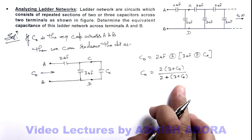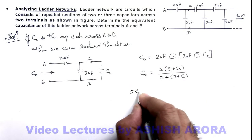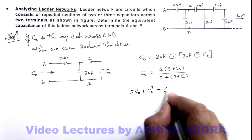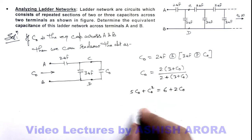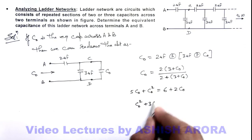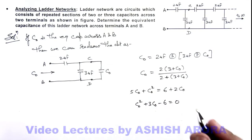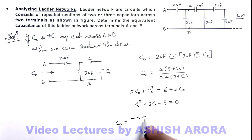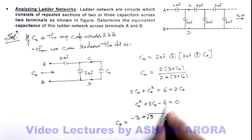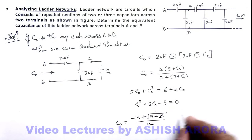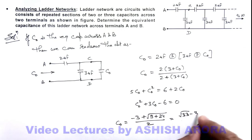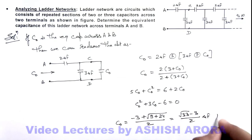Simplifying gives a quadratic equation: 5C₀ + C₀² = 6 + 2C₀, which reduces to C₀² + 3C₀ - 6 = 0. Solving this quadratic, we omit the negative root since capacitance cannot be negative. Using the quadratic formula with b² = 9 and 4ac = 24, the answer is C₀ = (√33 - 3) / 2 microfarads.